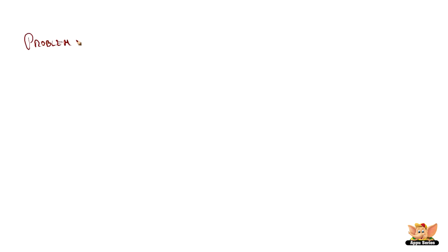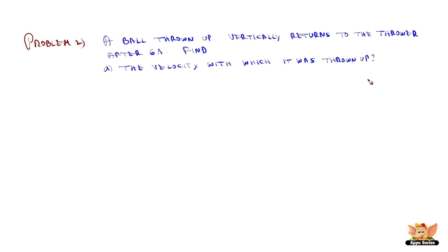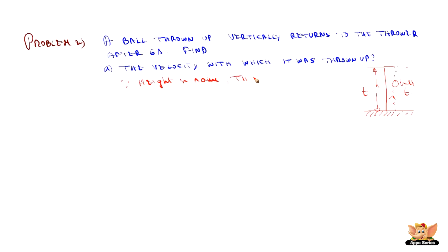Problem 2. A ball thrown up vertically returns to the thrower after 6 seconds. Find the velocity with which it was thrown up. The ball is thrown up and returns in 6 seconds. Since it comes back to the ground, the height going up equals the height coming down. Therefore, time for upward movement equals time for downward movement. Since total time is 6 seconds, T = 6 ÷ 2 = 3 seconds.